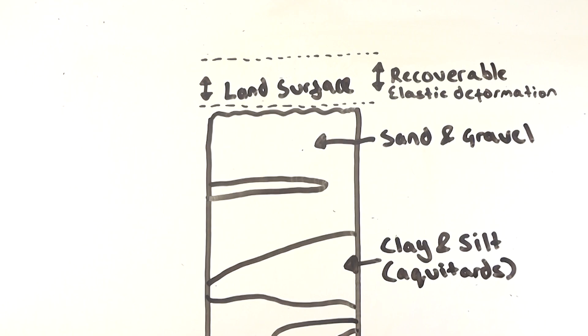While the ground can recover from land subsidence caused by reversible elastic deformation, long-term pumping of groundwater causes the land surface to subside permanently. This greatly reduces the groundwater storage capacity due to the reduced space around the granular aquitard skeletons.